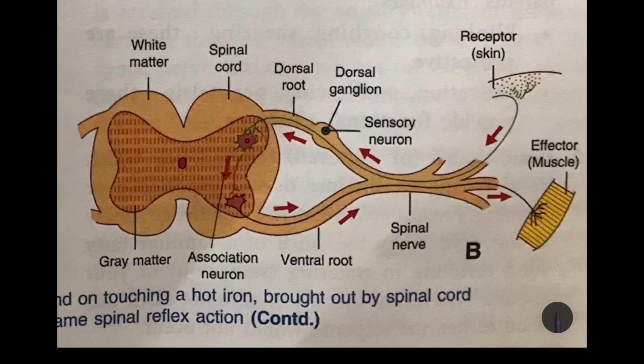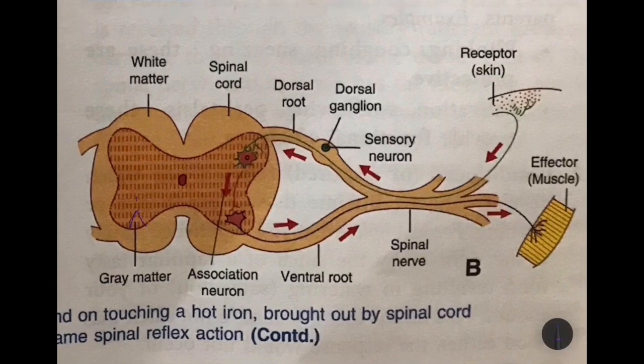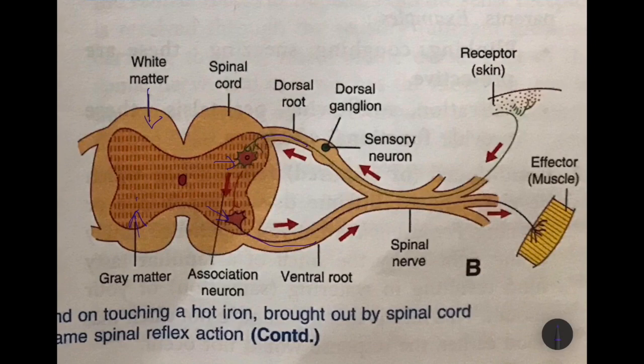Here in the spinal cord it is just the opposite — you will see the gray matter on the inside and white matter on the outside. The gray matter contains the cell bodies, which are found on the inside. These cell bodies of motor and association neurons lie on the inner side.